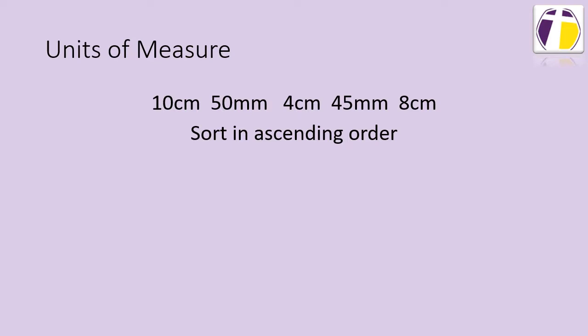Now we've spoken quite a lot about ascending and descending. Ascending means we order getting larger, descending means we get smaller. So we're going to be ordering this from smallest to largest. Now you may well notice that some of them are in millimeters and some of them are in centimeters. So we need to convert them both to the same units.